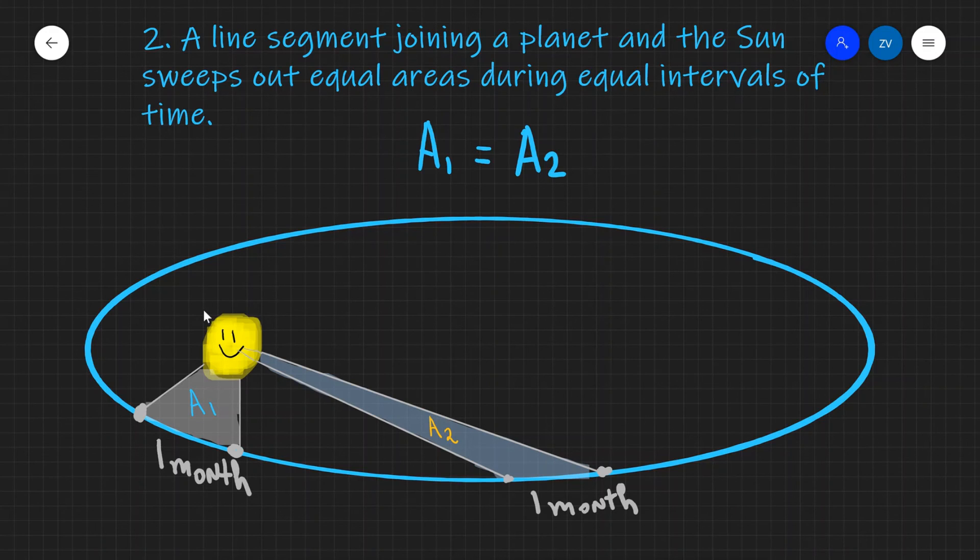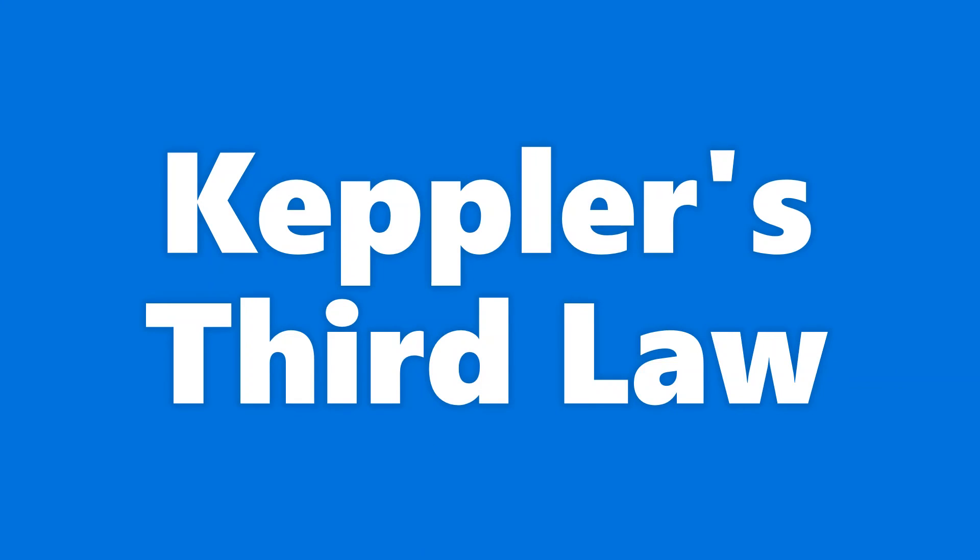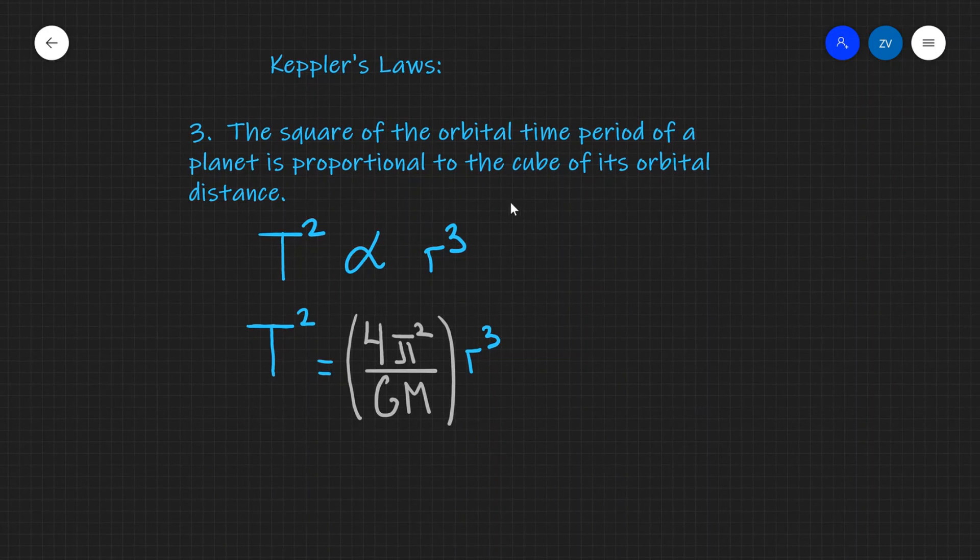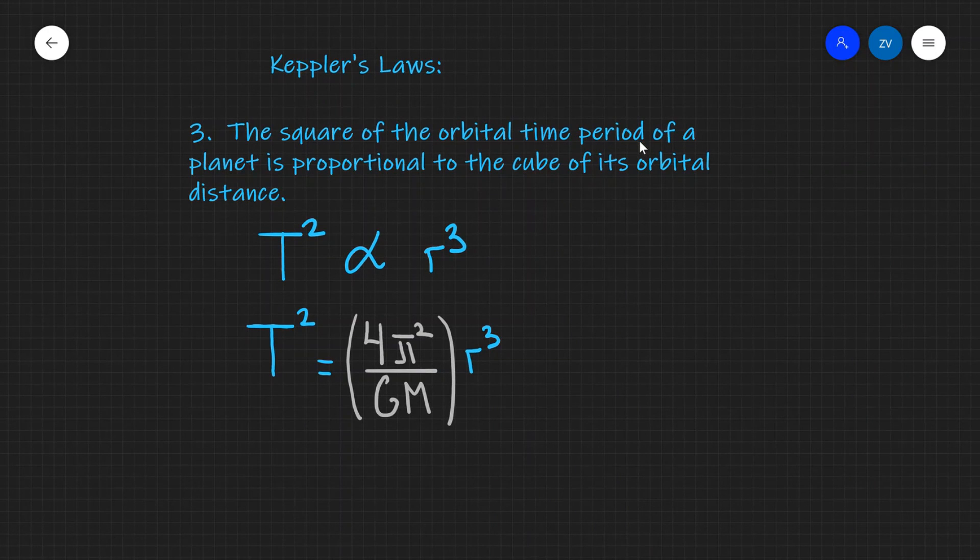Okay folks, so let's have a look at Kepler's third law. Kepler's third law is a mathematical statement. It says that the square of the orbital time period is proportional to the cube of its orbital distance.